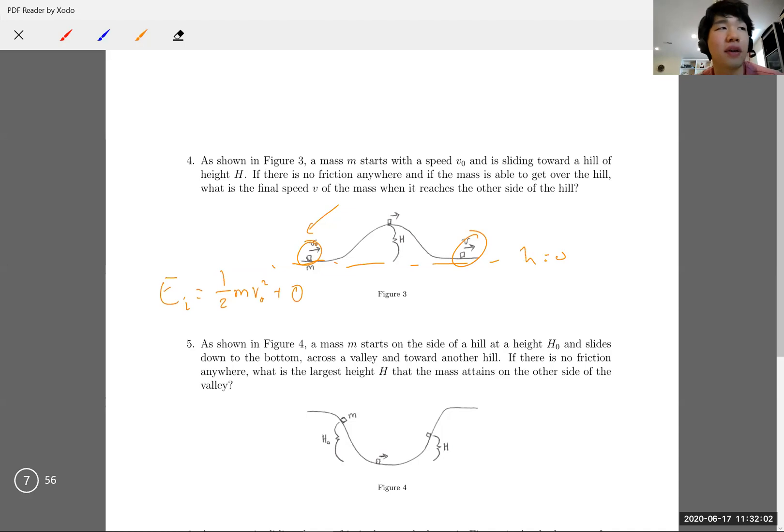Now let's look at the final energy, Ef, which is equal to one over two m v squared plus zero. Conservation of energy says that because there are no non-conservative forces in play, energy is conserved. So the initial energy Ei equals the final energy Ef.